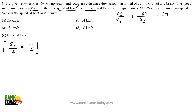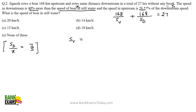The speed in upstream is 28.57% of the downstream speed. Since 2/7 = 28.57%, this means su/sd = 2/7. So the speed in upstream is 28.57% of the downstream speed.